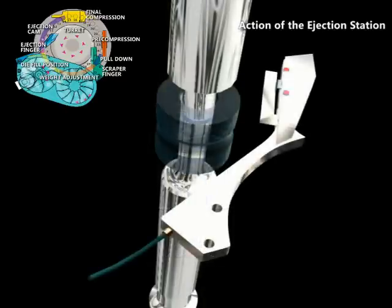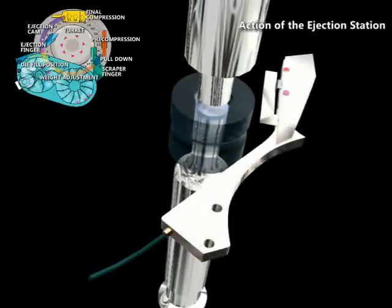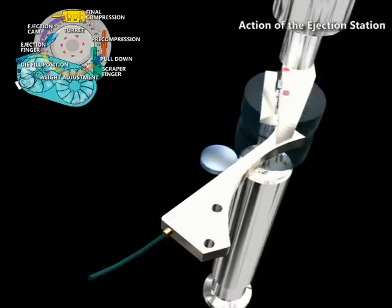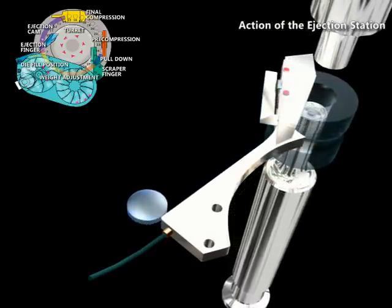Before reaching the full ejection position, the upper punch is lifted out of the die bore while the lower punch is being pushed up by the ejection cam, thereby pushing the tablet out of the die.